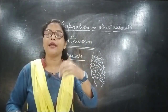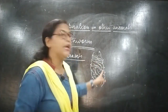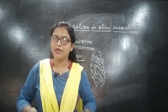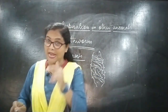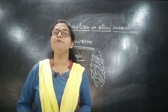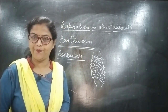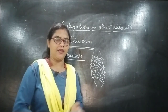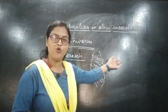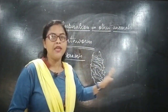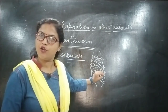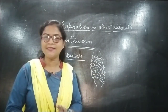Since the inhaled air goes directly to the air tubes in cockroaches, they do not need red blood cells to carry oxygen. That is why cockroaches lack RBC — the major function of RBC is to carry oxygen, but since cockroaches take oxygen directly from the atmosphere through their air tubes, they don't need RBC. As a result, the color of their blood is white.